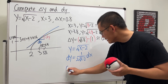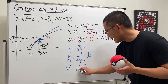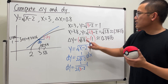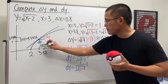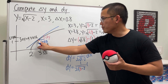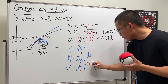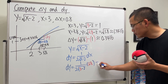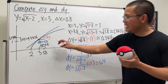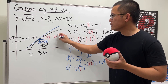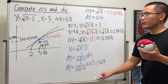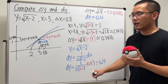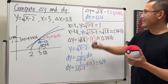Computing dy: substitute x = 3 and dx = 0.8 into the formula. dy = [1 / (2√(3 - 2))] × 0.8 = (1/2) × 0.8 = 0.4. So dy = 0.4, which is indeed bigger than Δy ≈ 0.3416, confirming our picture. Which is easier to compute without a calculator — Δy or dy? Leave your answer in the comments below.